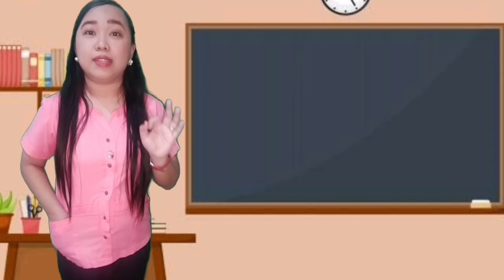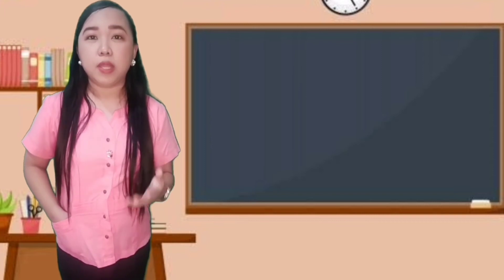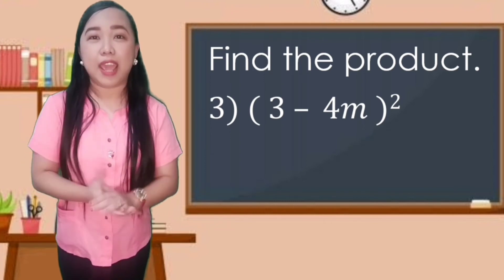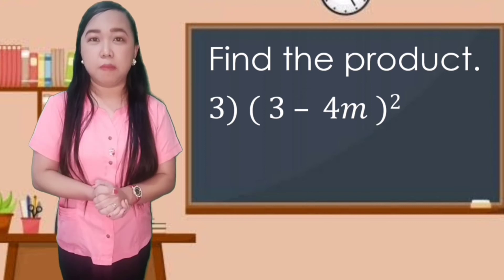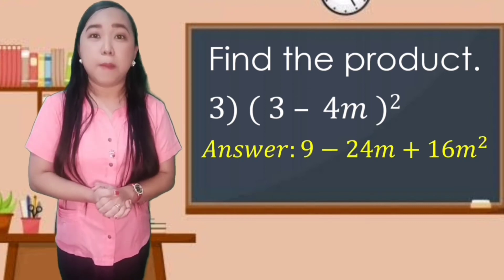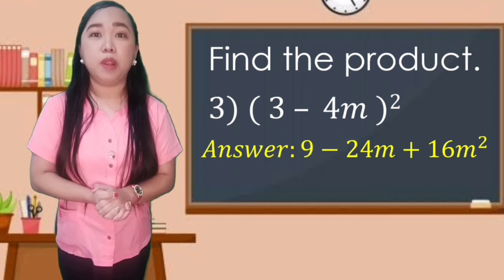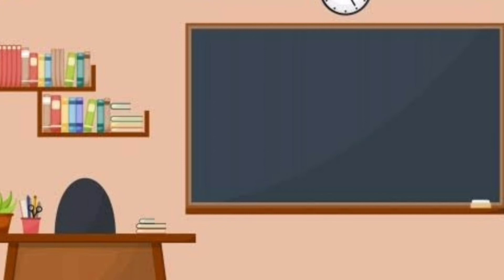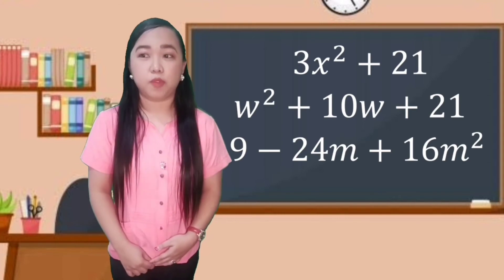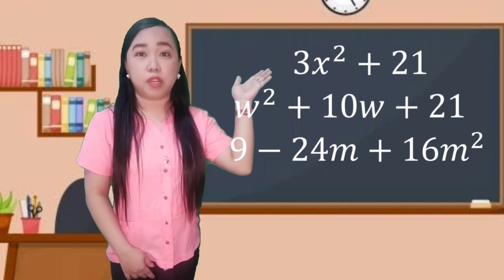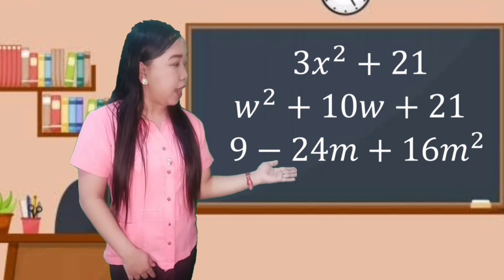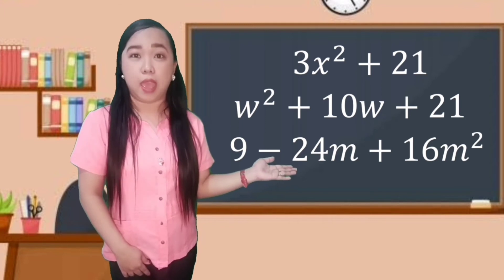For the third given, find the product of the square of 3 minus 4m. The square of 3 minus 4m is equal to 9 minus 24m plus 16m squared. So these are the products we got: 3x squared plus 21; w squared plus 10w plus 21; and 9 minus 24m plus 16m squared.